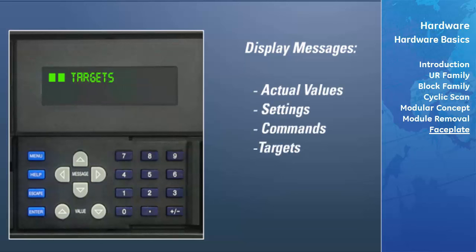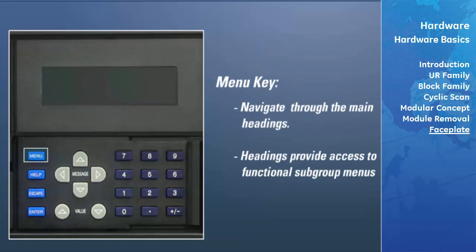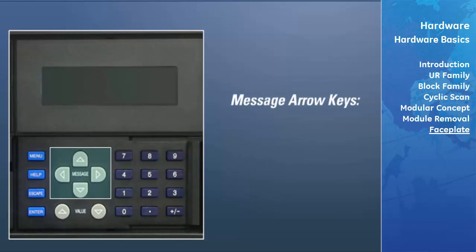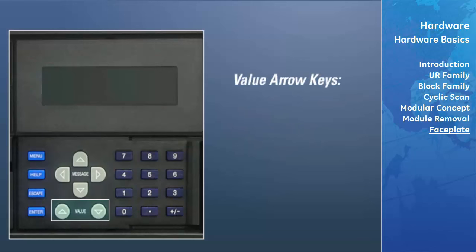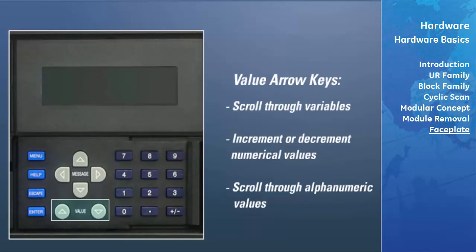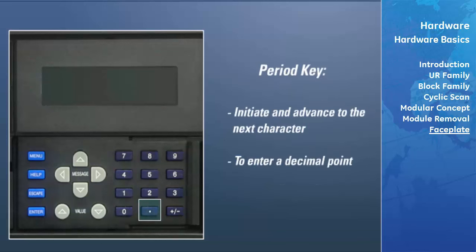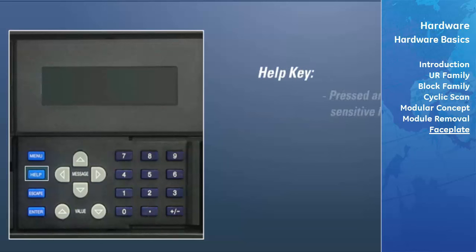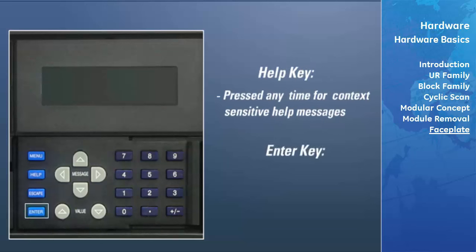The menu key is used to navigate through the main menu headings, which provide access to functional subgroup menus. The message arrow keys are used to navigate through the subgroup menus. The value arrow keys are used to scroll through variables in settings programming mode to increment or decrement numerical setting values, and are also used to scroll through alphanumeric values in text edit mode. Values may also be entered with the numeric keypad. The period key initiates and advances to the next character in text edit mode or enters a decimal point. The help key may be pressed at any time for context-sensitive help messages. The enter key is used to store values.